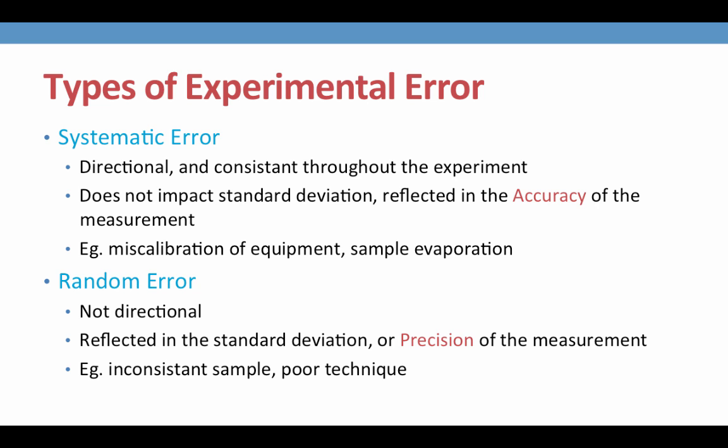If the random error is truly random, it will not be visible in the accuracy. You may get the exact percent water that your unknown should contain, but your standard deviation, or precision, could be quite large. Random errors often occur through an inconsistent sample, meaning a heterogeneous sample that was not mixed well, or from poor technique.